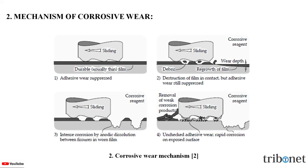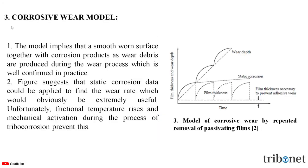Here, let us understand the corrosive wear model. The model implies that a smooth worn surface together with corrosion products as wear debris are produced during the wear process, which is well confirmed in practice. The figure suggests that static corrosion data could be applied to find the wear rate, which would obviously be extremely useful.